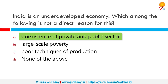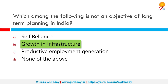Which among the following is not an objective of long-term planning in India? The correct answer is growth in infrastructure. The long-term goals for India were: economic development, increased employment, self-sufficiency, economic stability, social welfare and services, regional development, comprehensive development, reduction of economic inequalities, social justice, and increase in standard of living. Growth in infrastructure does not figure in that list.